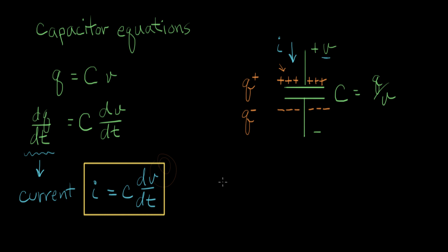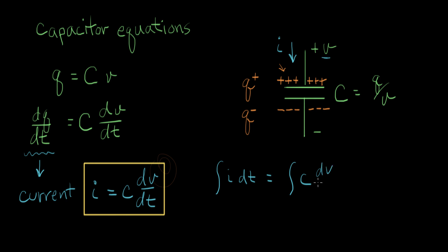Now what I want to do is find an expression that gives V in terms of I. Right now we have I in terms of dV/dt. Let's figure out if we can express V in terms of some expression containing I. To eliminate this derivative, I'm going to take the integral of both sides of the equation. So we have the integral of I with respect to time equal to the integral of C·dV/dt with respect to time dt.